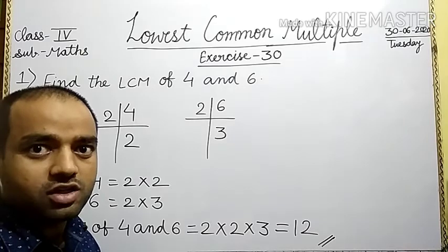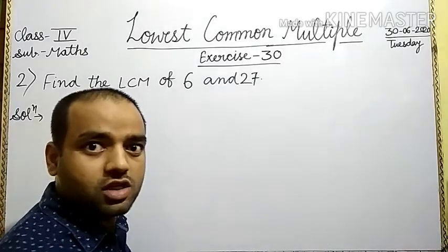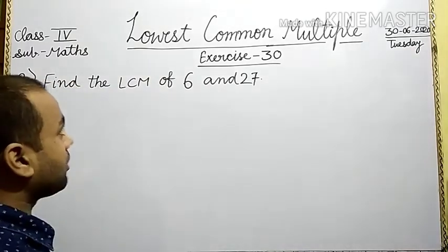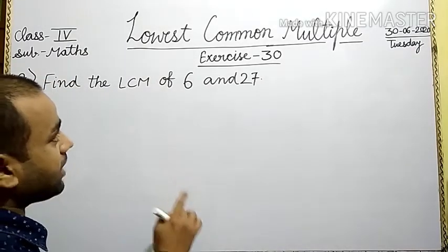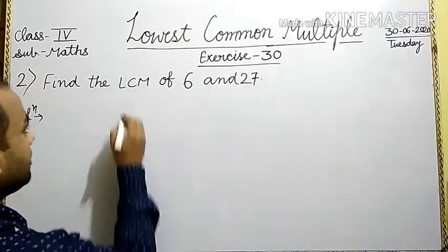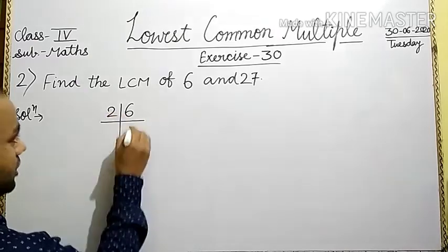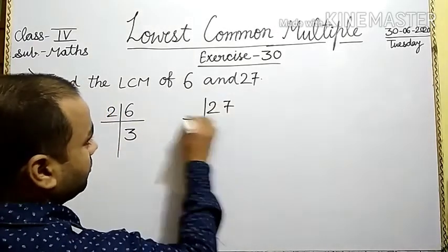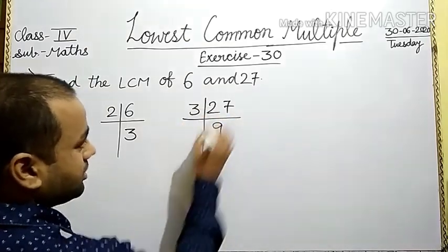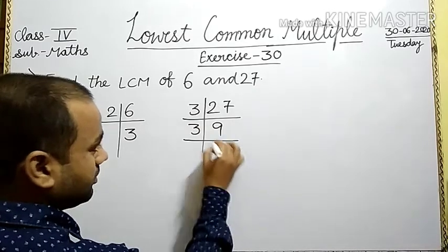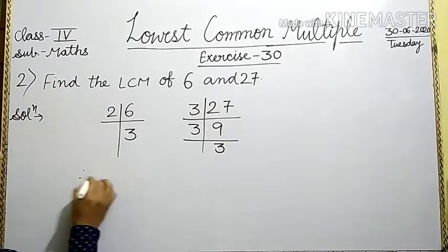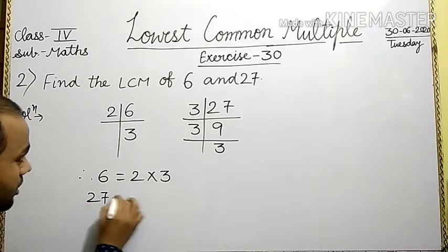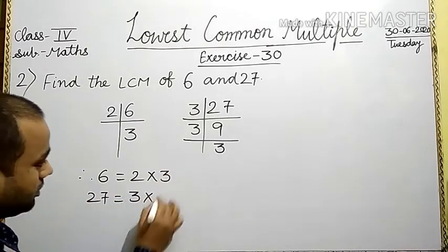In question number 2, find the LCM of 6 and 27. First of all, we find the prime factors of 6 and 27 by division method. 2 divides 6 to give 3. Is it clear? Next, 27: 3 divides 27 to give 9, then 3 divides 9 to give 3. And lastly, we write: 6 is equal to 2 into 3. 27 is equal to 3 into 3 into 3.